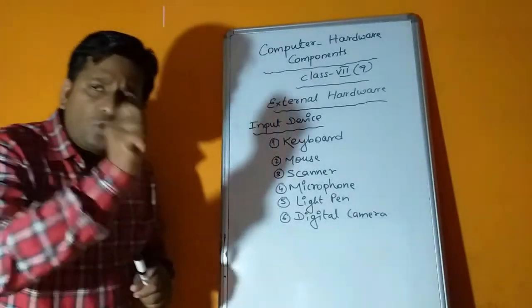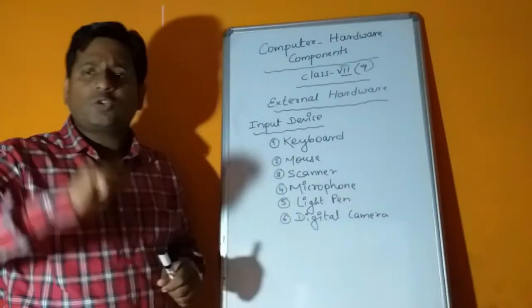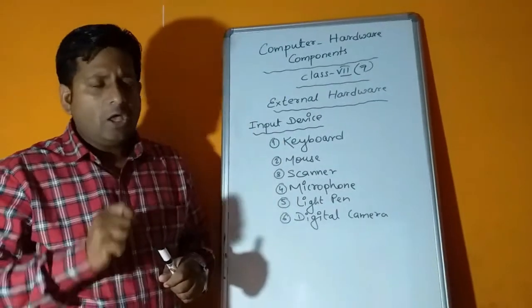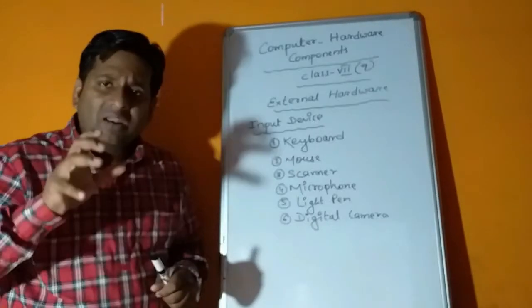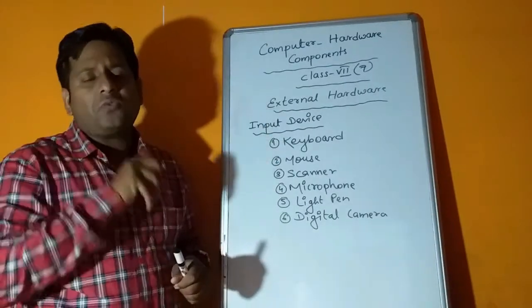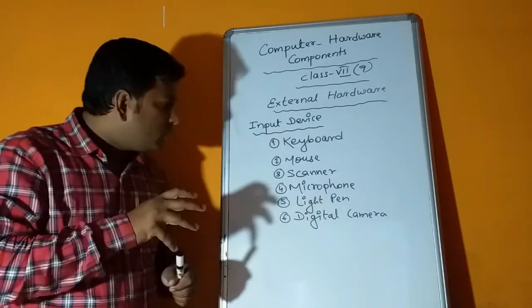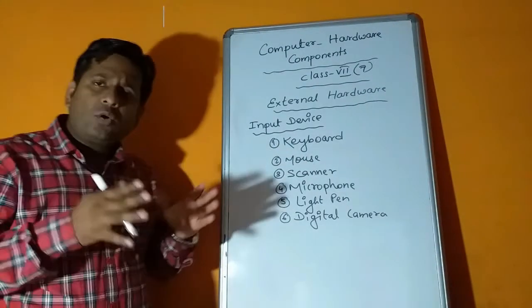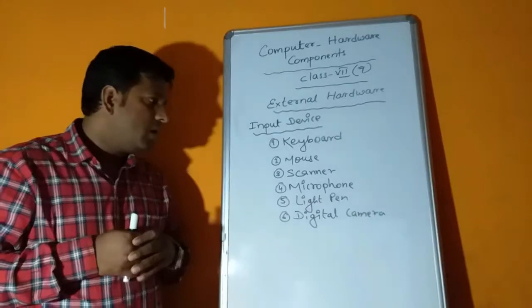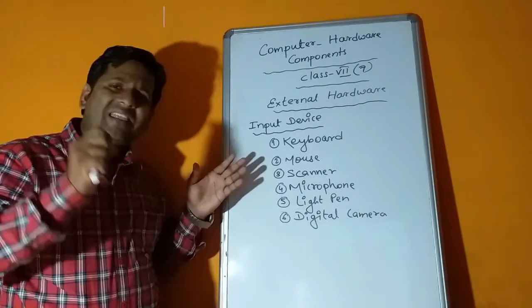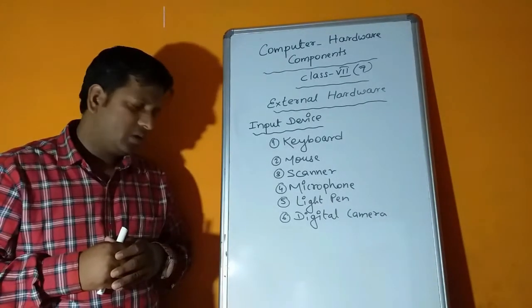Next we have mouse. Mouse is a pointing device. It is used to point, draw or move objects. This mouse is also known as a handheld device we can hold in our hand.